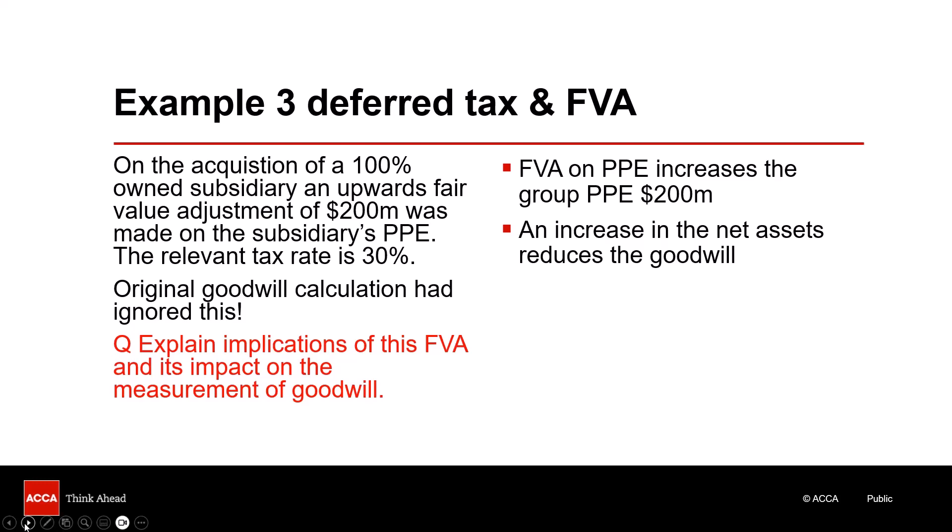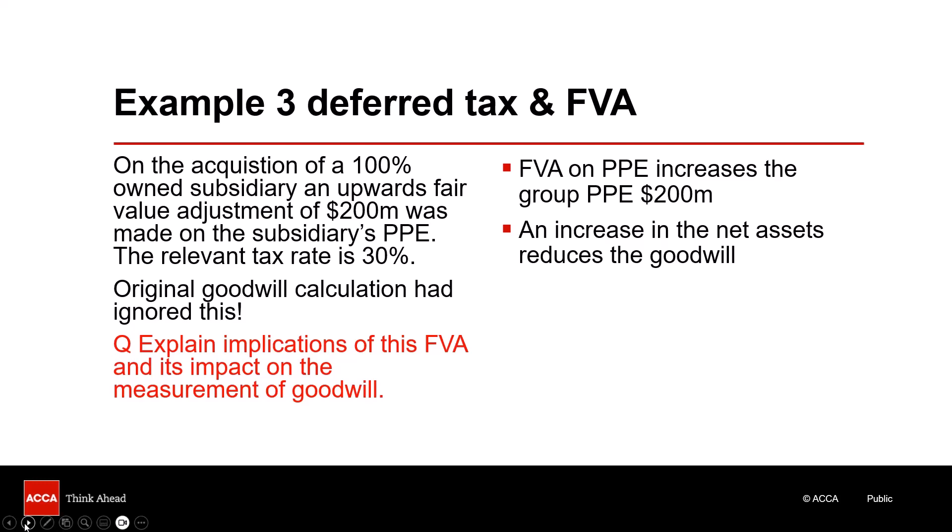Now let's think about this in terms of deferred tax. The carrying value, as far as the group is concerned, is getting bigger; there's no current tax being assessed; the tax base remains the same. So this is a gain — a taxable temporary difference — and therefore a deferred tax liability. At 30% the answer is 60. That is an additional deferred taxation liability of 60. So from a net asset and goodwill point of view, the net adjustment is 140.